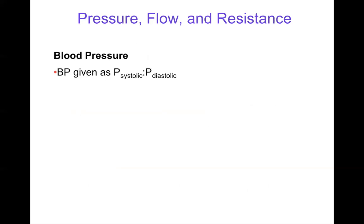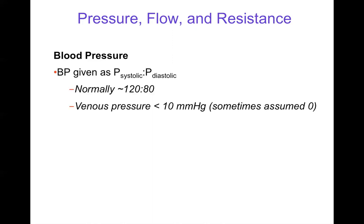Physiologically, blood pressure is usually given by two numbers. Systolic pressure is when the heart pumps, and diastolic is when the heart is relaxed. Typical blood pressure is 120 over 80 in millimeters of mercury. Venous pressure is usually around 10 millimeters of mercury or less, and for simple modeling it can be approximated as zero.